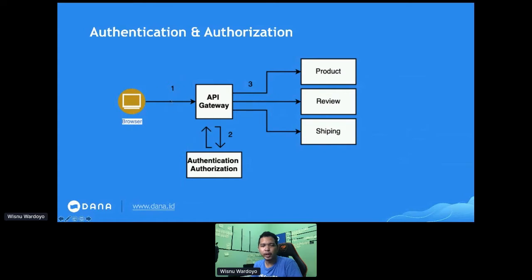Looking at this diagram: number one is the incoming request, and number two is the API Gateway forwarding the request to an authentication and authorization system, then deciding whether the request can continue. If it can, it forwards the request through the API Gateway to the microservices. The result from authentication and authorization can also be brought along with the request to the respective microservices.